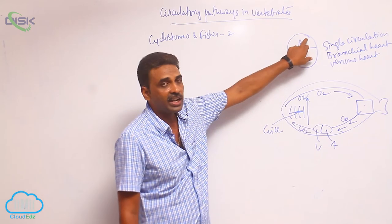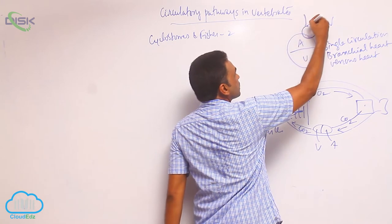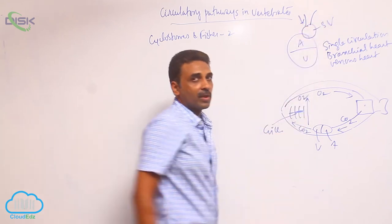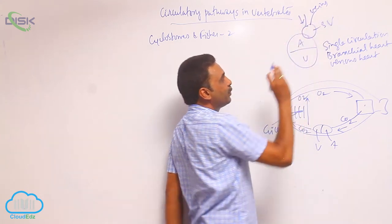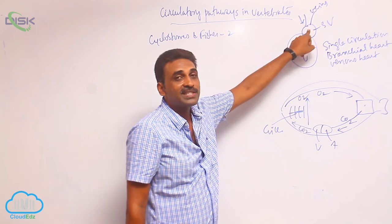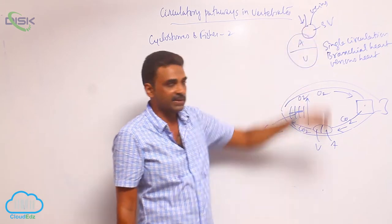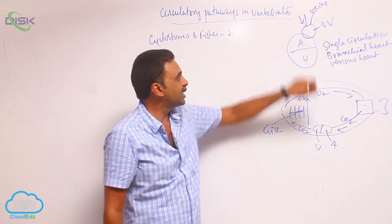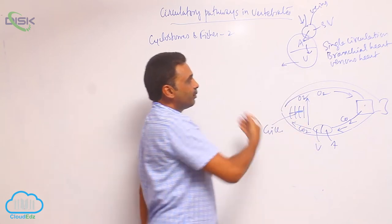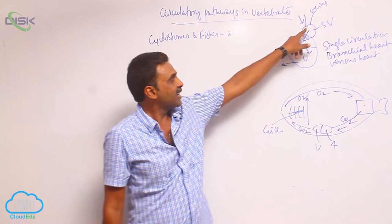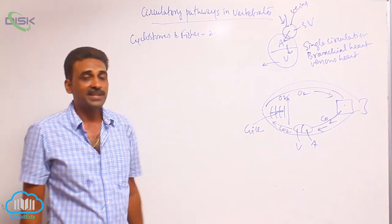Associated with the atrium, there is a sinus venosus. All the veins come and open into this sac-like chamber called the sinus venosus - sinus meaning an empty space, venosus relating to veins. Blood enters the sinus venosus, then the atrium, then the ventricle, and then enters the ventral blood vessel. The sinus venosus itself is the pacemaker in this animal.